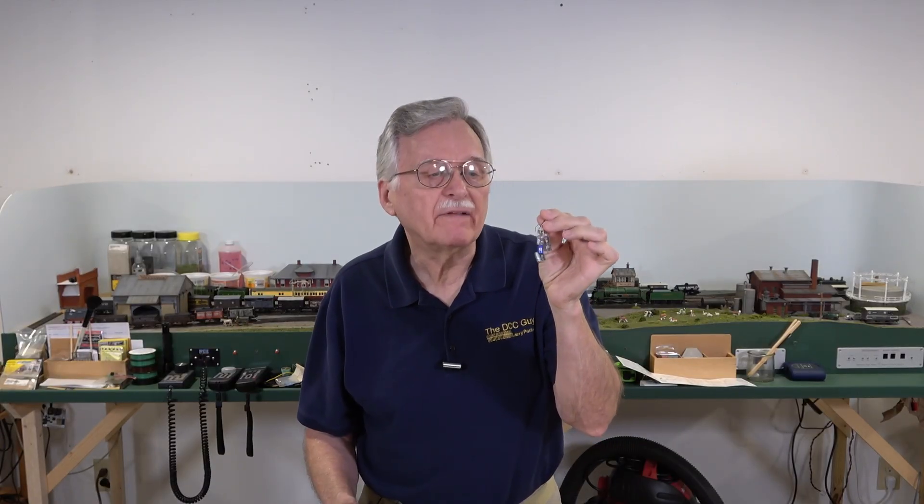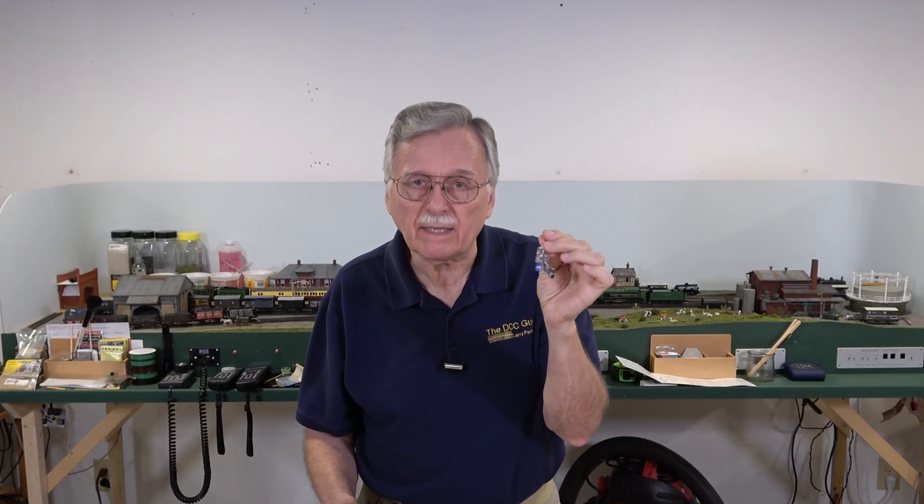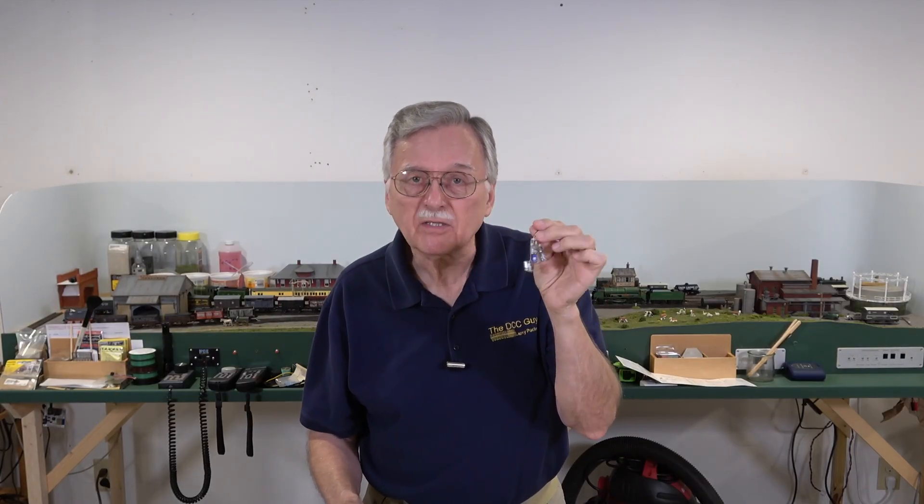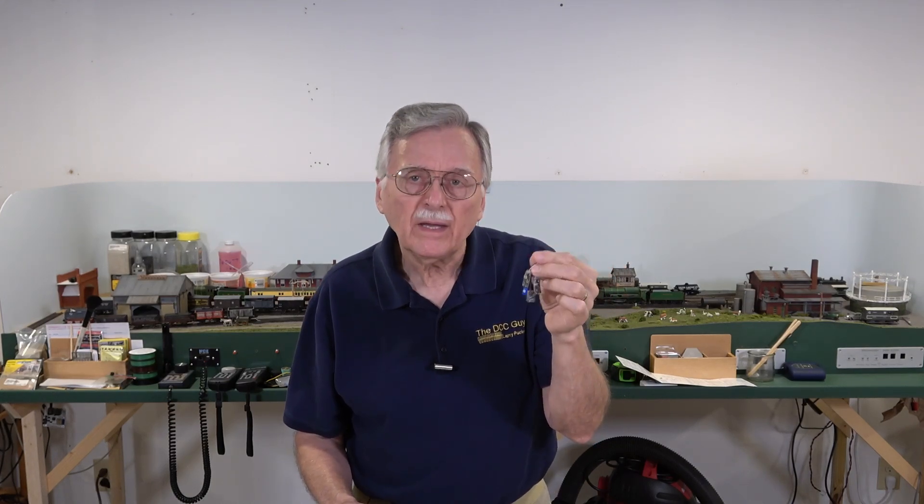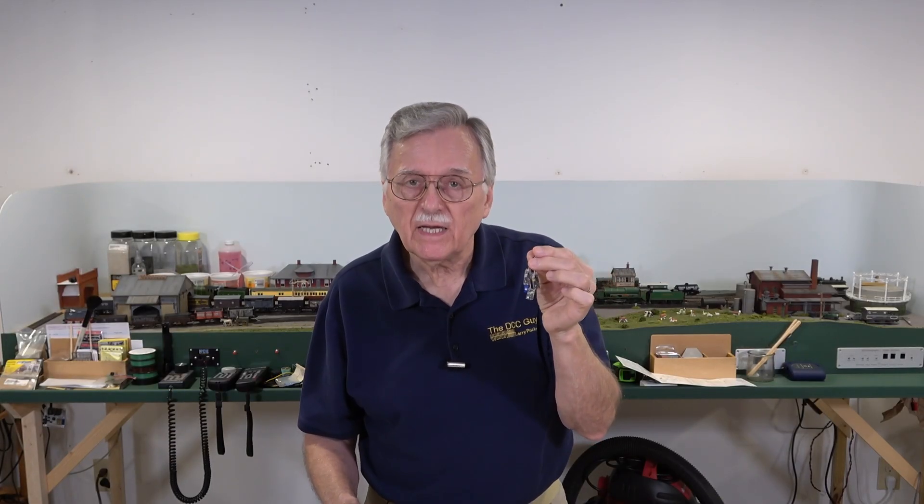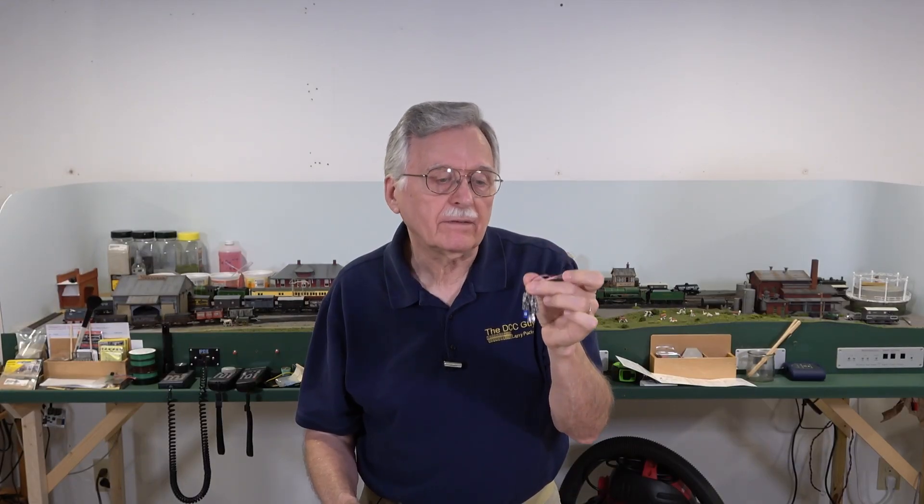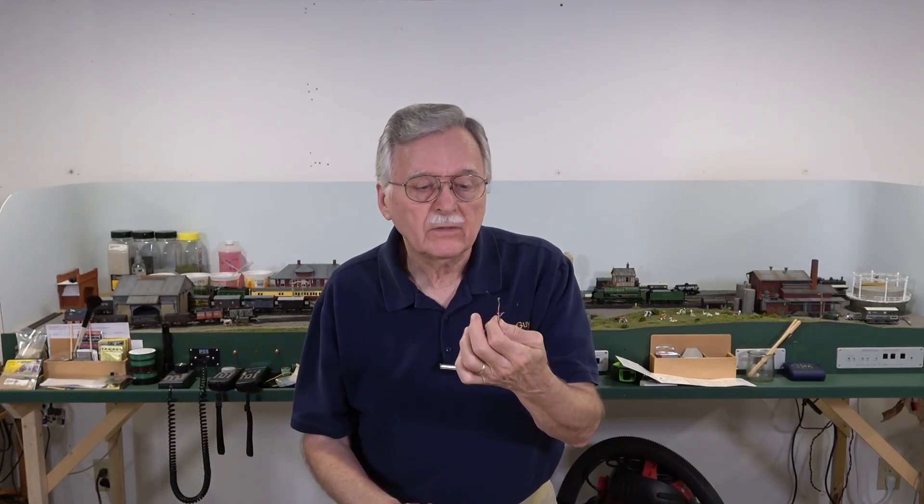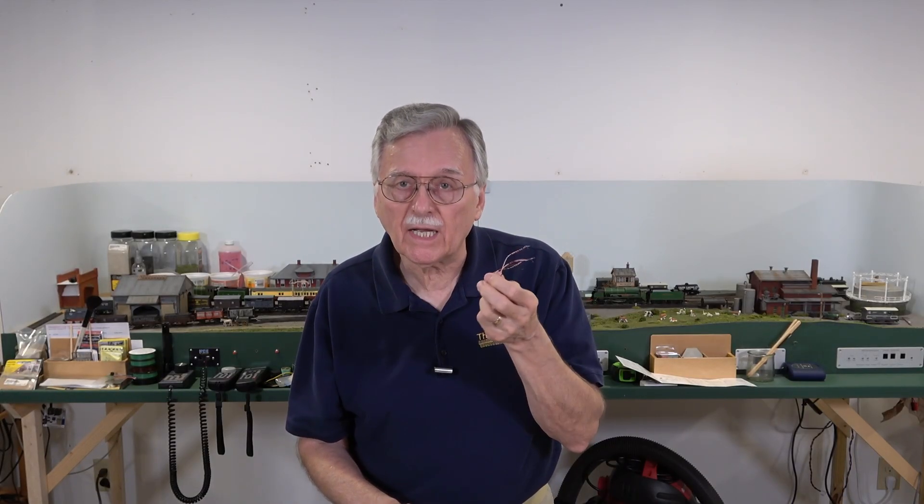That's a wrap for today's video. So now you know that if you have any of these three-wire Stay Alives tucked away in your electronics box, just waiting for a Lokesound decoder to go with them, you should be able to pair them with any of the decoders that normally use a two-wire Stay Alive device. Because now you know the secret. Connect that red and the white wire together, connect that to the blue wire, connect the black wire to your ground connection, and you're ready to go.